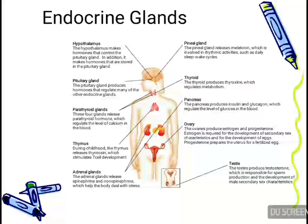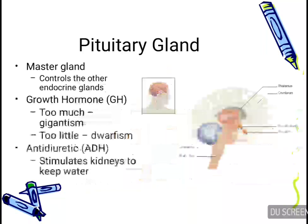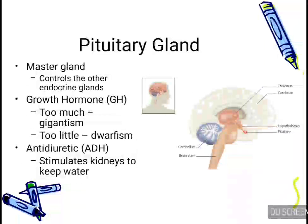The first gland is the pituitary gland, which is present at the base of the brain. It is called the master gland because it controls the other endocrine glands. It secretes growth hormone and antidiuretic hormone. Growth hormone regulates the growth of the body.